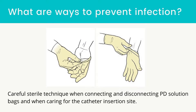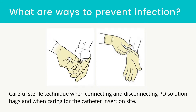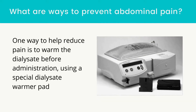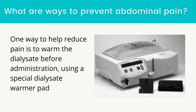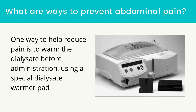To prevent peritonitis, maintain meticulous sterile technique when connecting and disconnecting the PD solution bags and when caring for the catheter insertion site. Prevent the catheter insertion site dressing from becoming wet, and change the dressing if wet or soiled. Abdominal pain — peritoneal irritation during inflow commonly causes discomfort during the first few exchanges, but pain usually disappears after 1–2 weeks of treatment. Warming the dialysate before administration using a special dialysate warmer pad helps reduce pain, as the cold temperature of the dialysate can cause discomfort.